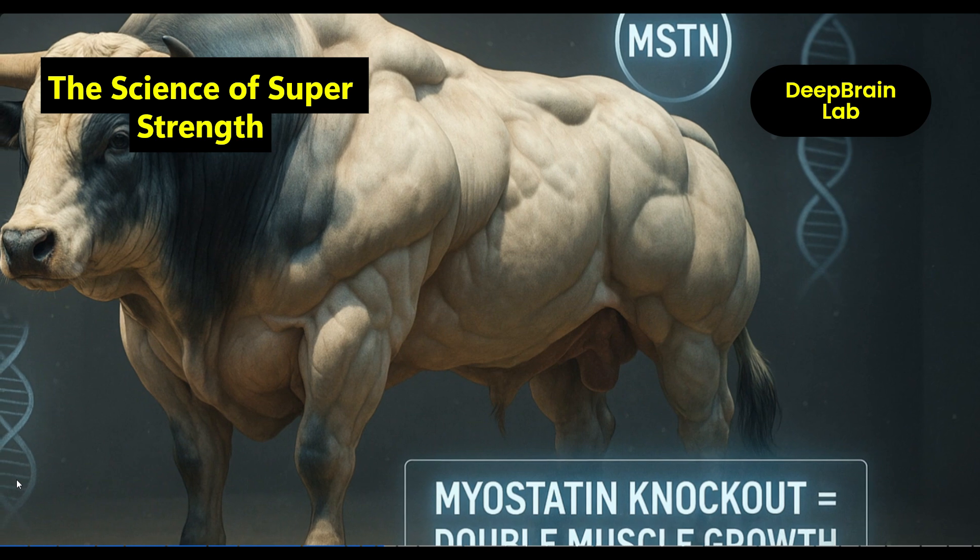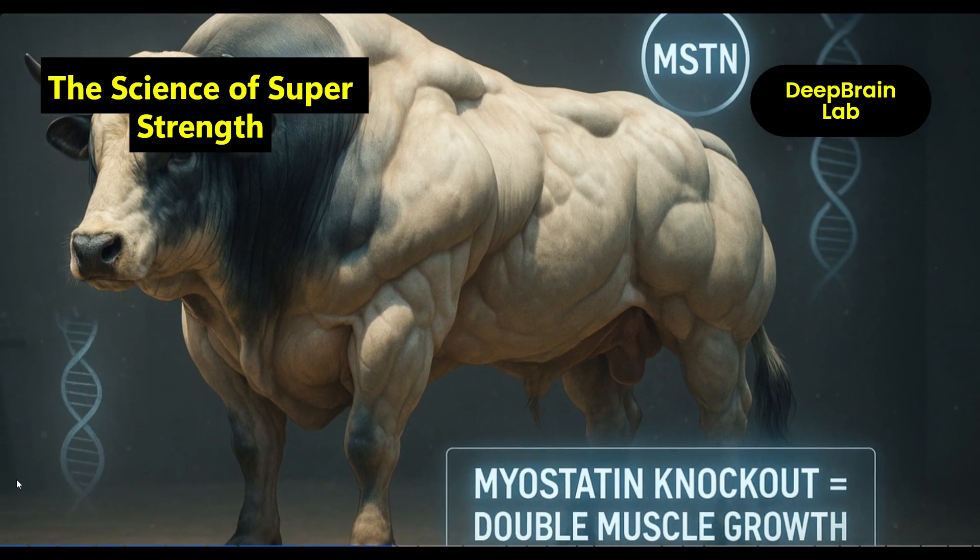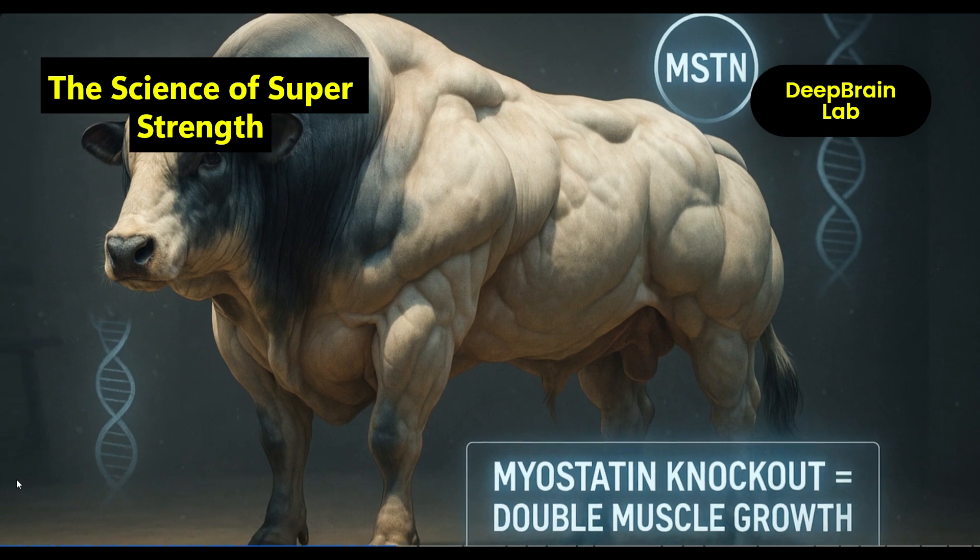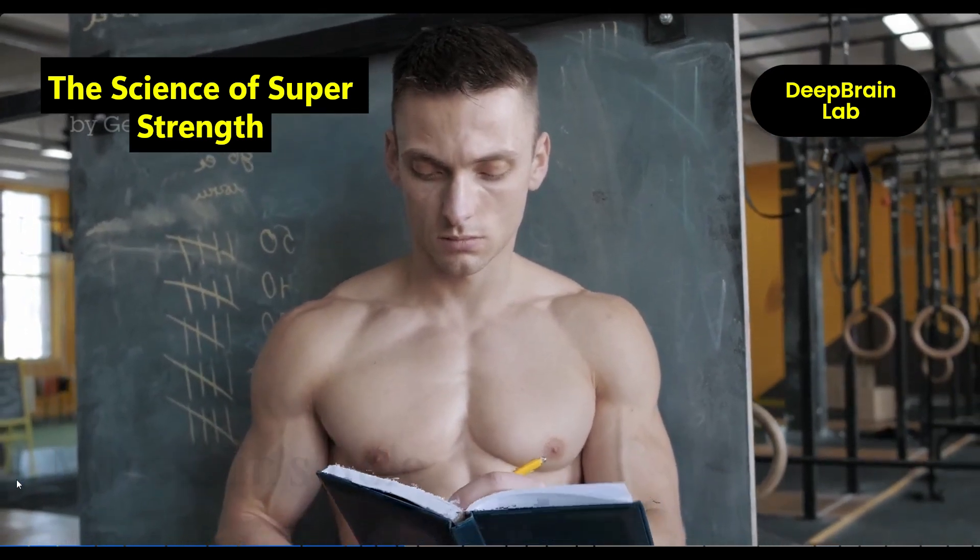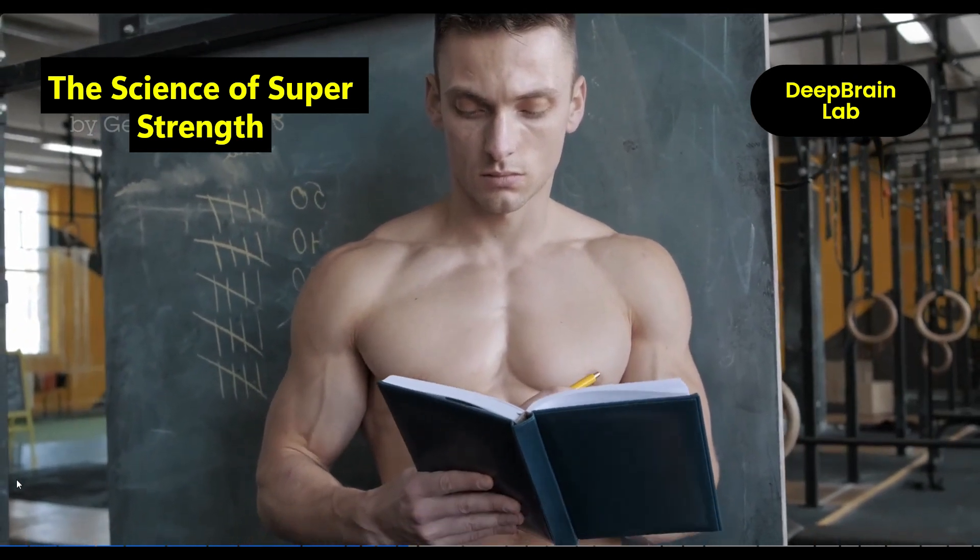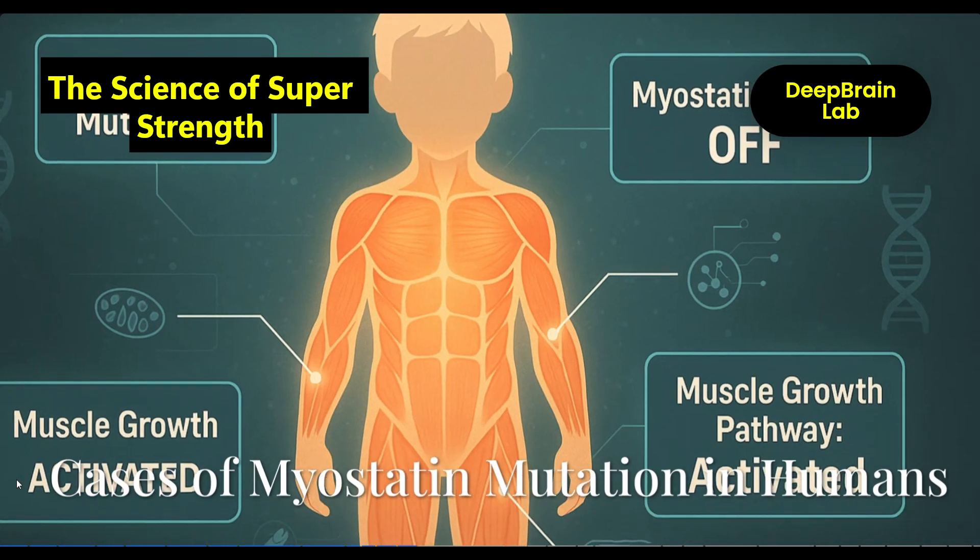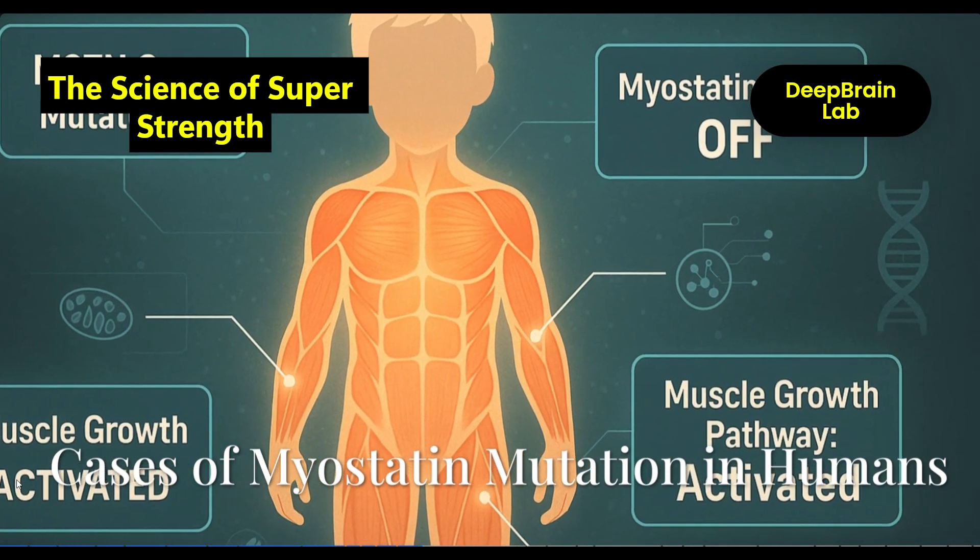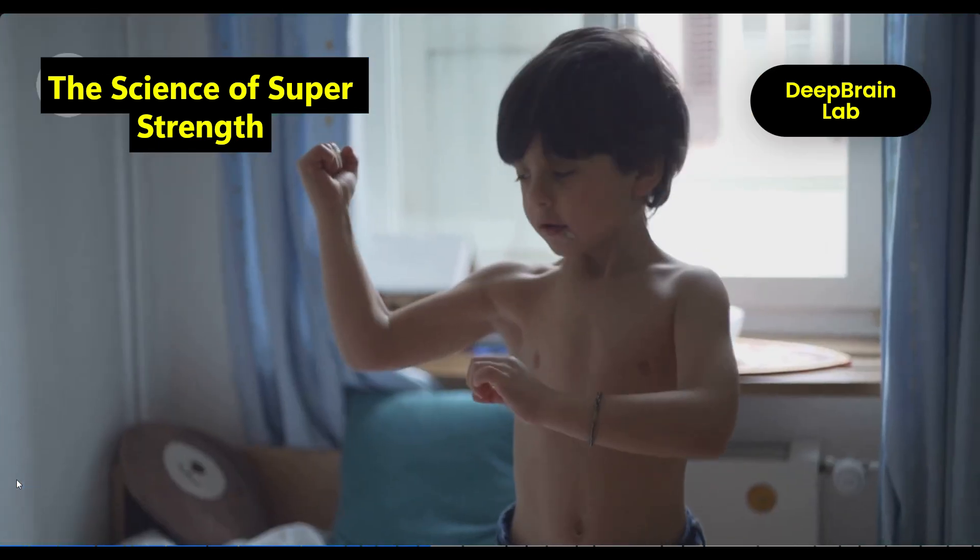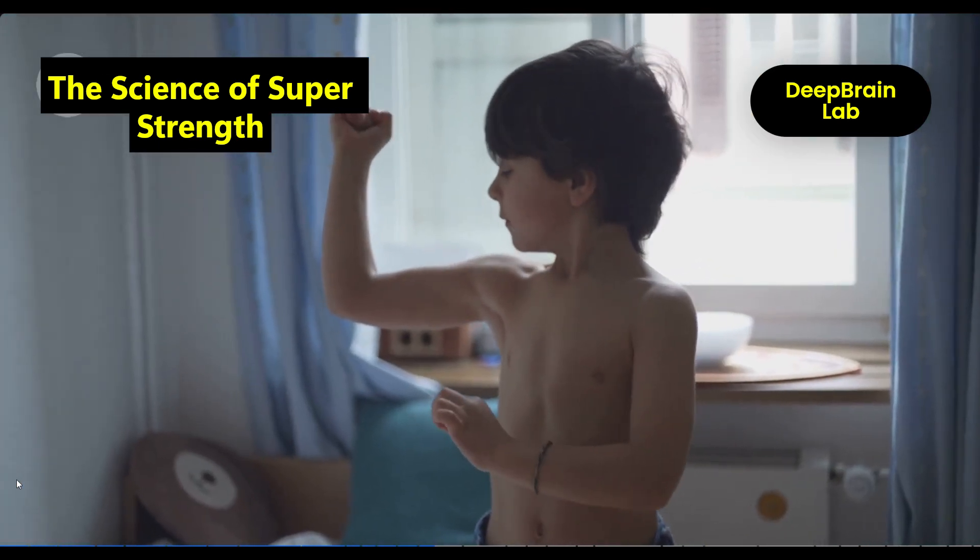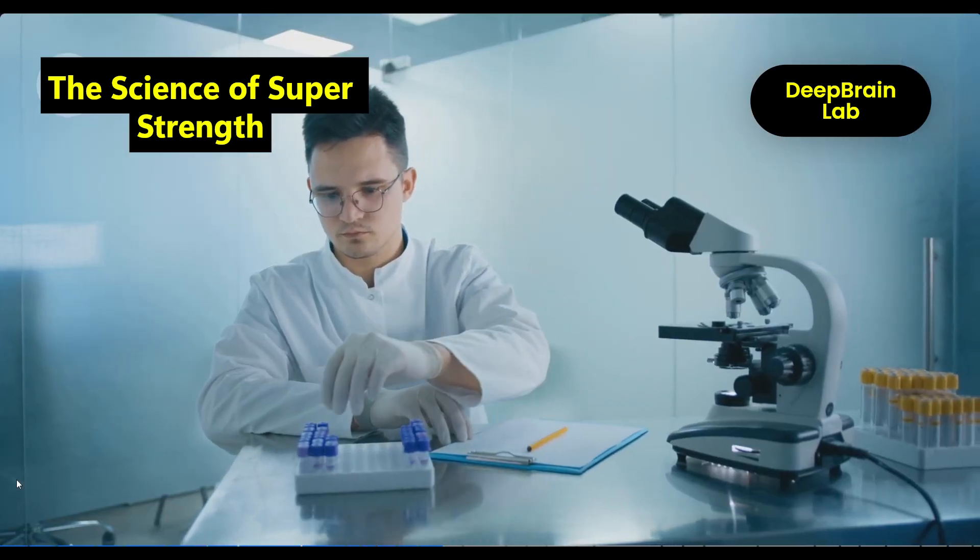Meet the Belgian Blue bull. It looks photoshopped—muscles stacked on muscles. Why? A mutation in the myostatin gene or MSTN. Myostatin is like a muscle growth brake. Knock it out, and muscles grow without limits. Some humans are born with this mutation too. In 2004, a German toddler stunned doctors. He had almost no body fat and massive muscle tone, and he wasn't even five years old. Genetic tests showed he had a double mutation in his myostatin gene.